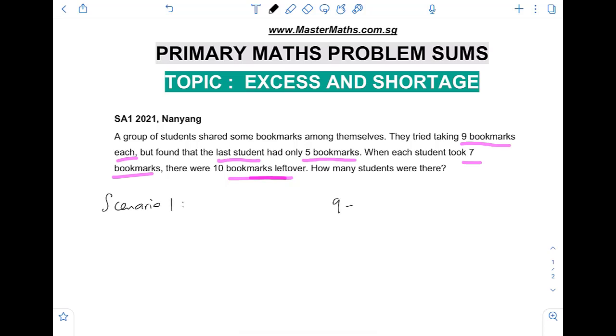Scenario one will be as we've discussed earlier: nine minus four, a shortage of four bookmarks. Scenario two, on the other hand, will be an excess. Excess of how many? Excess of 10 bookmarks.